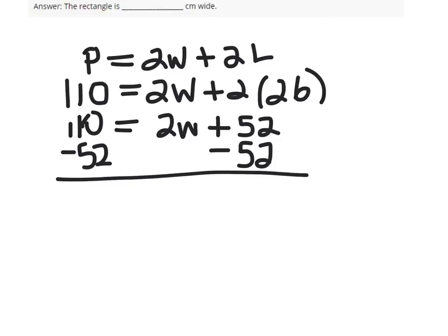So, 110 minus 52 is going to be 58. 58 equals 2W. Then we divide both sides by 2. And W is equal to 29.